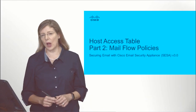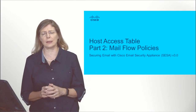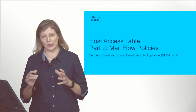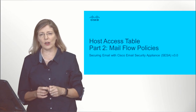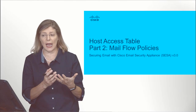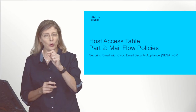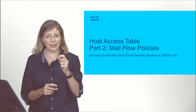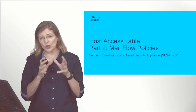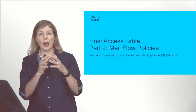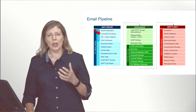Welcome back. Let's continue talking about the host access table. In the previous recording we discussed the first part of the host access table, which was sender group. The idea with sender group is that when we have an incoming mail session, we assign the incoming connection to one of the sender groups such as suspect list or blacklist, and depending on which sender group you're assigned to, that TCP session will have a specific treatment: block, accept, or throttle. That treatment is handled by your mail flow policy.